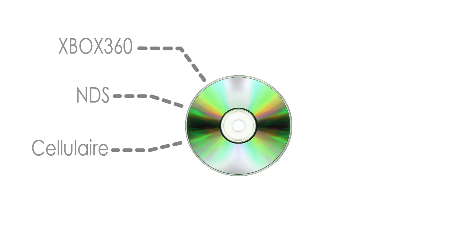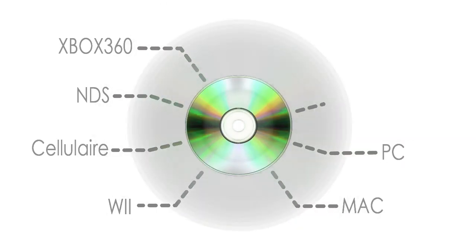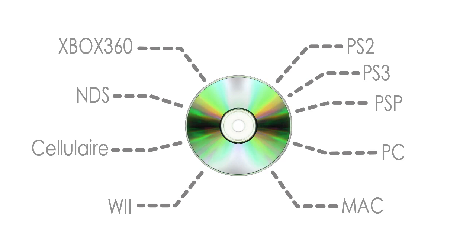Recent gaming software is generally produced for one or more of the following systems: Xbox 360, Nintendo DS, cellular, Wii, Mac, PC, PSP, PS3 and PS2. The type of game, nature of mechanics, and complexity of graphics is often what makes it harder to port a game from one console to the other.